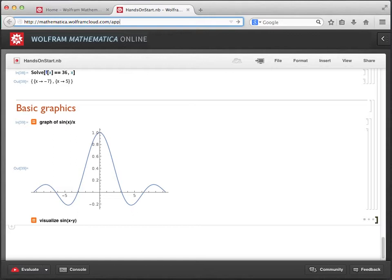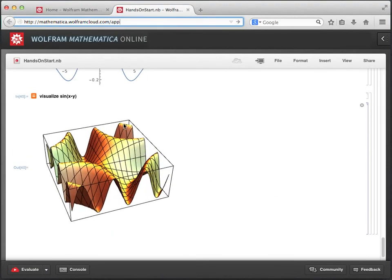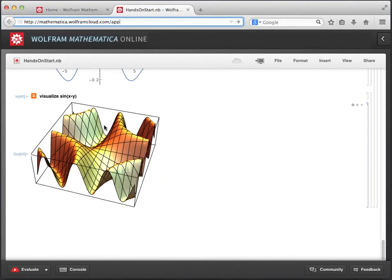We hit shift enter again to evaluate and we see the result. Now any 3D graphic in Mathematica Online can be rotated by clicking and dragging. You can also zoom in and out by holding down the control or command key while dragging.